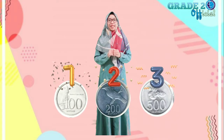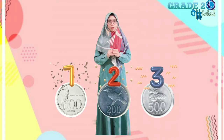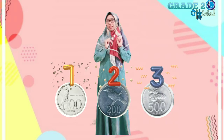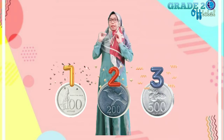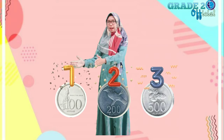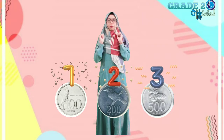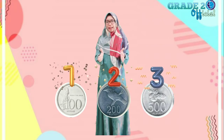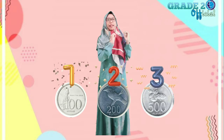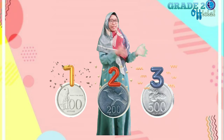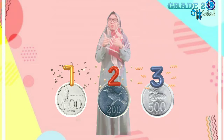Jadi, urutan nilai pecahan uang dari yang lebih kecil ke yang lebih besar: yang pertama ada 100 rupiah, kemudian ada 200 rupiah, dan yang terakhir ada 500 rupiah. Good job!